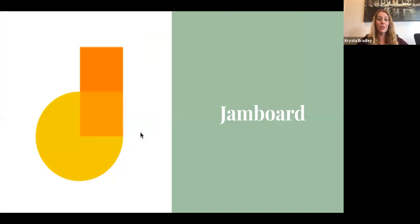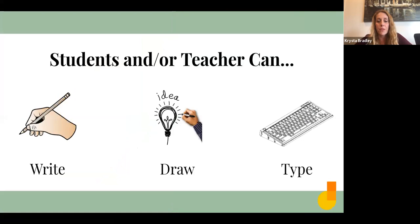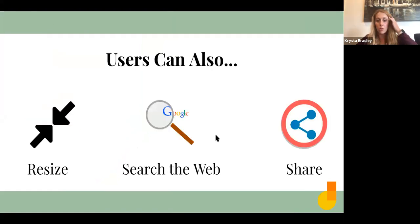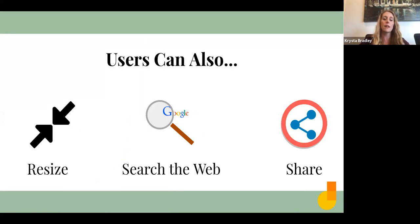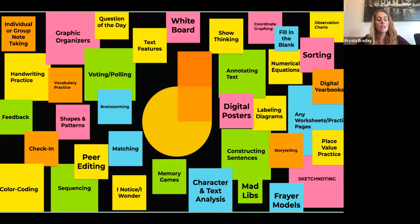Jamboard — a favorite. Hopefully we've all explored Jamboard a little bit over the past year, but let's dig a little deeper. With Jamboard, the student and teacher are able to write, draw, and type. You're also able to resize any images or text you put onto your Jamboard. You can search the web to find images, and you can share it — it's a collaborative document. Here are some ways you can use Jamboard; you can refer back to these later.